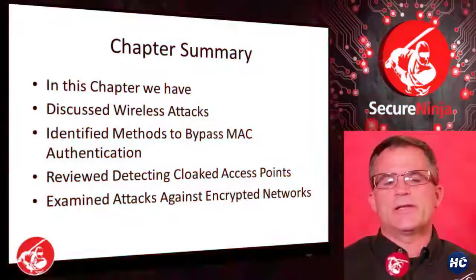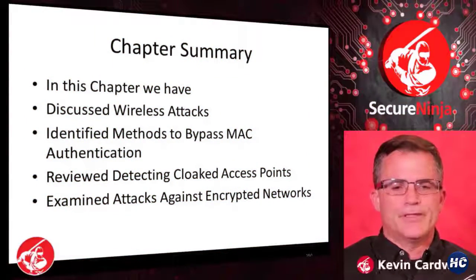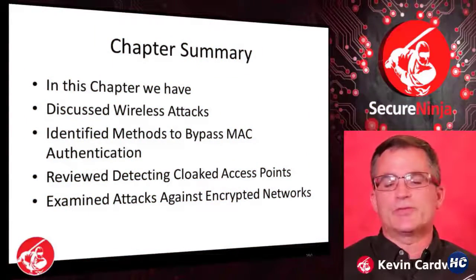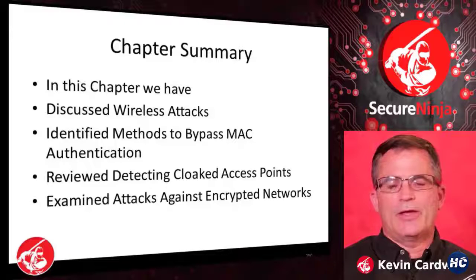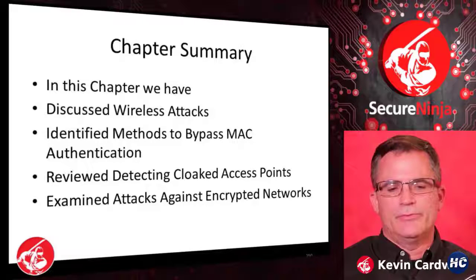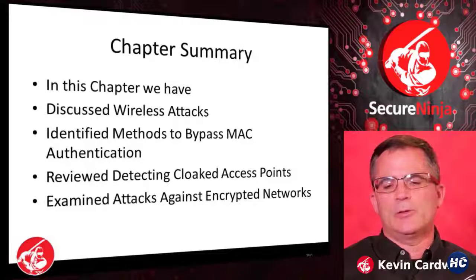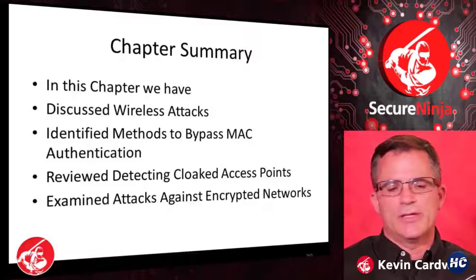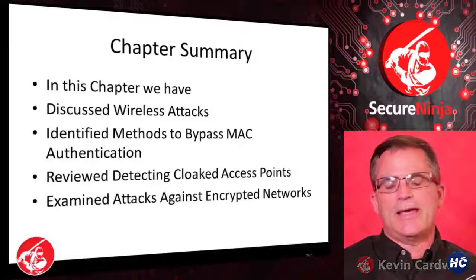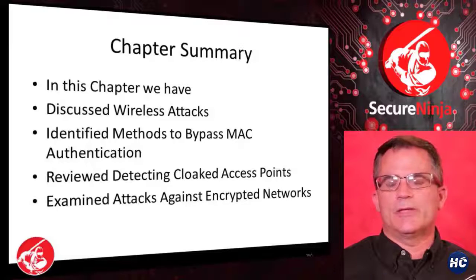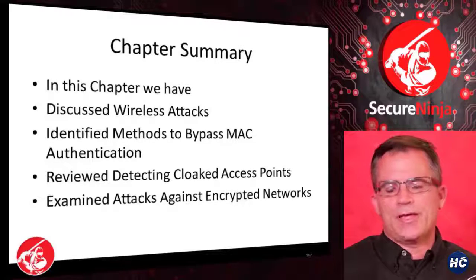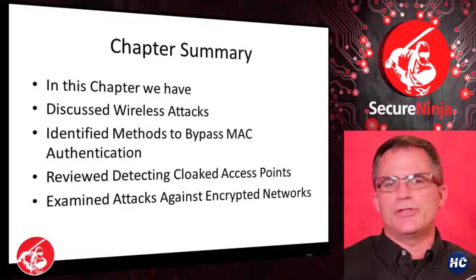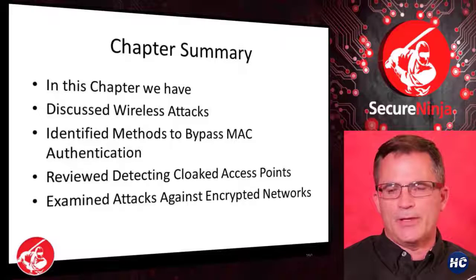This brings us to the chapter summary. In this chapter we've discussed wireless attacks, identified methods to bypass MAC authentication, reviewed detecting cloaked access points, and examined attacks against encrypted networks. Any type of authentication that's used — if we intercept it and it's not encrypted — we can spoof or masquerade as somebody else.